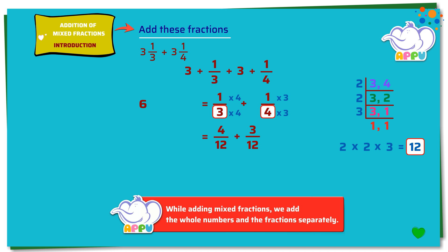Now, the denominators are the same for both the fractions. That is 12. We write the denominator as 12, and we add the numerators. 4 plus 3 equals 7. This is 7 by 12. Adding, we get 6 plus 7 by 12. So, the answer is 6 7 by 12.